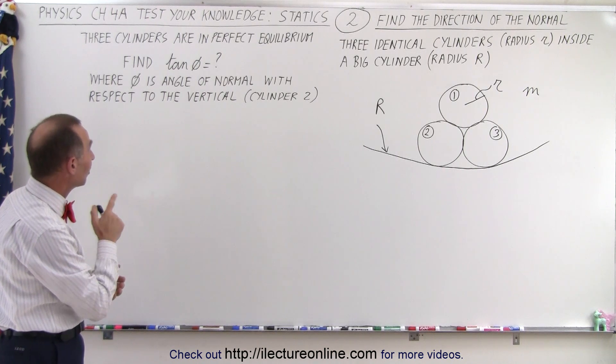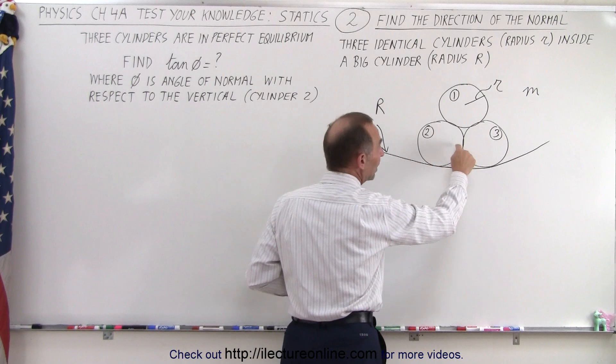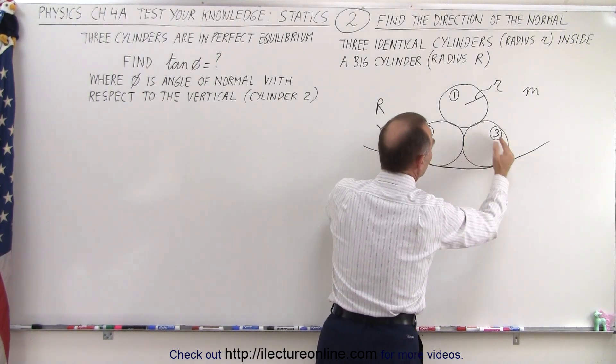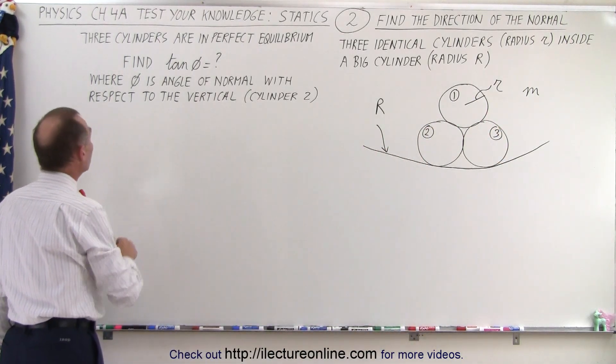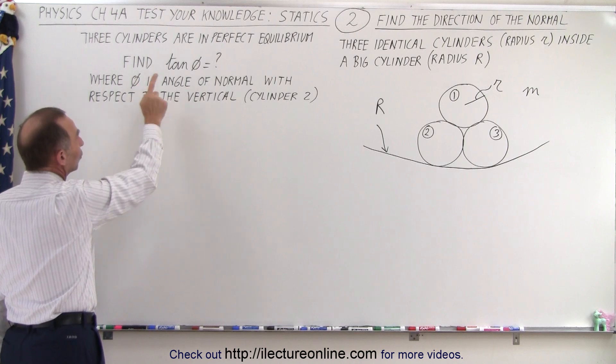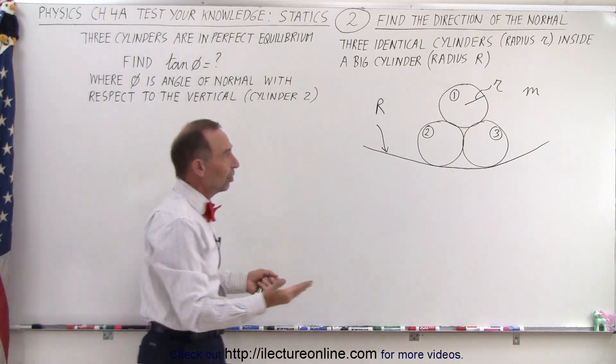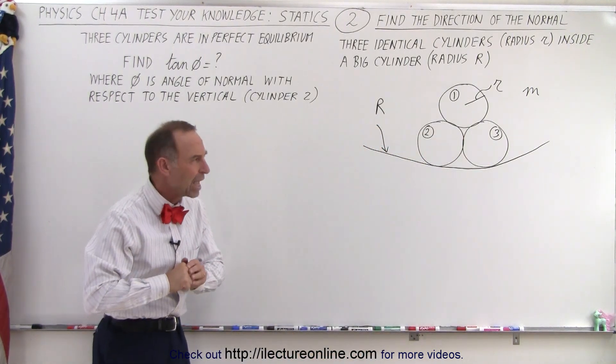Notice that these cylinders are in perfect equilibrium, which means there's no force between these two right here, and they're not going to fall apart or be pushed apart by the weight of this one. They're just in perfect equilibrium right there. And notice that we're looking for the angle of the normal with respect to the vertical for cylinder two, which of course would be the same as for cylinder three.